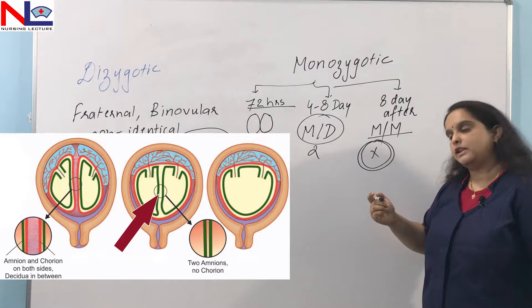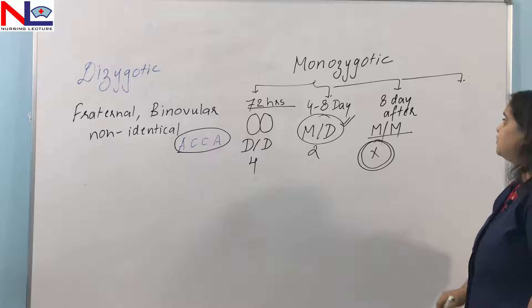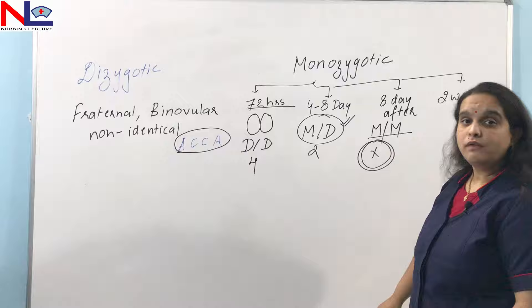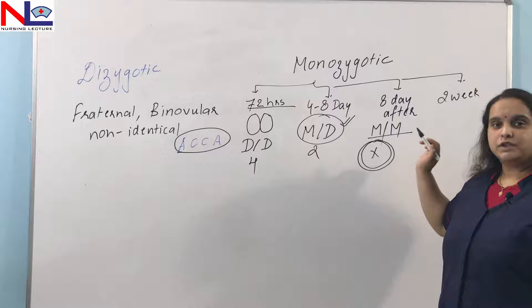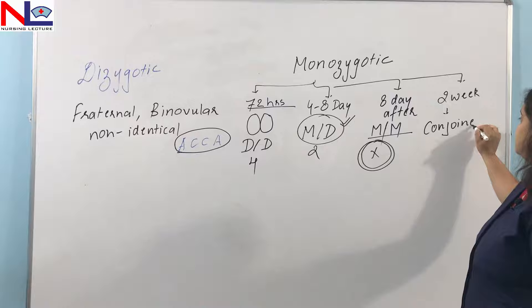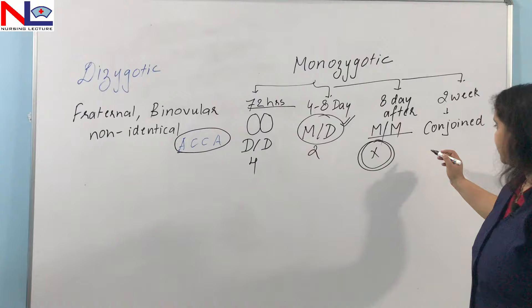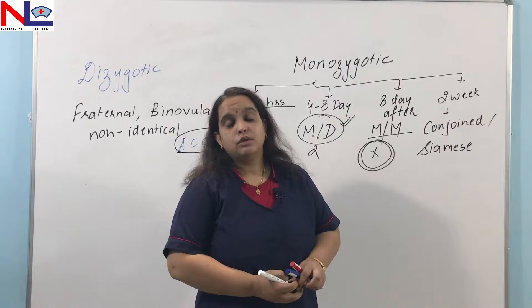The most common variety in monozygotic twins is monochorionic diamniotic. When division takes place after two weeks of fertilization, both chorion and amnion are single, forming only one gestational sac. In this condition the developing fetuses are called conjoined twins — or Siamese twins — because they are joined by different parts of their body.